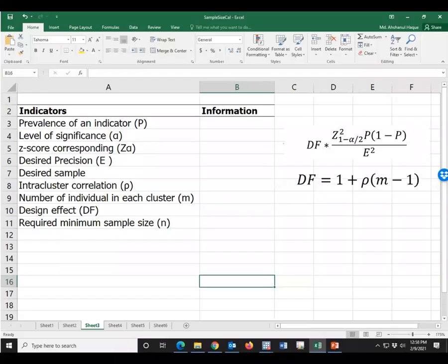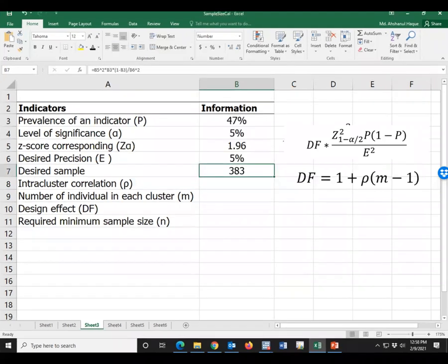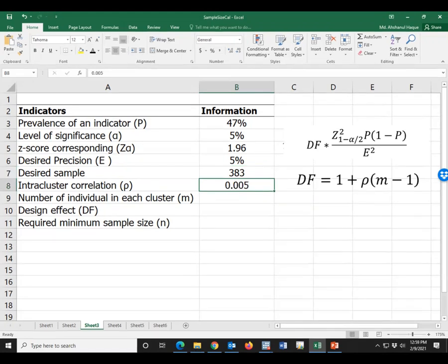Now, from the excel formula: prevalence of outcome, level of significance, Z score, precision, and sample size is 383. Now we have to include some extra information for cluster sample. Let intracluster correlation be 0.005. Assume that the number of individuals in each cluster is 25. This is the average value.